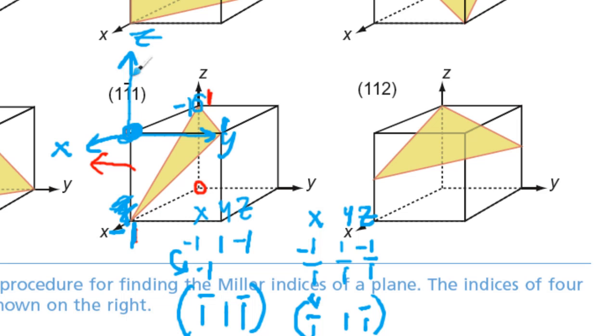You can see this plane right here is the same as this plane. Essentially, it's the backside of this plane. So these two planes are equivalent.